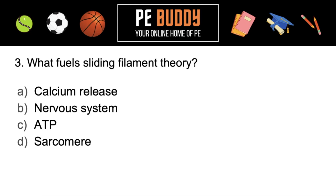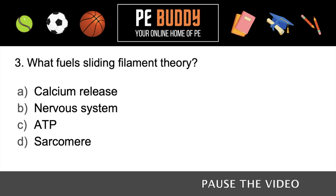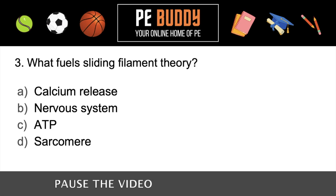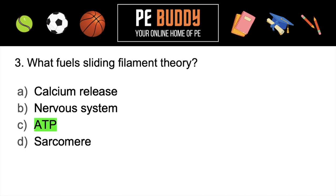Question number three: what fuels sliding filament theory? Is it calcium release, the nervous system, ATP, or the sarcomere itself? The correct answer is ATP — this is the body's energy currency.